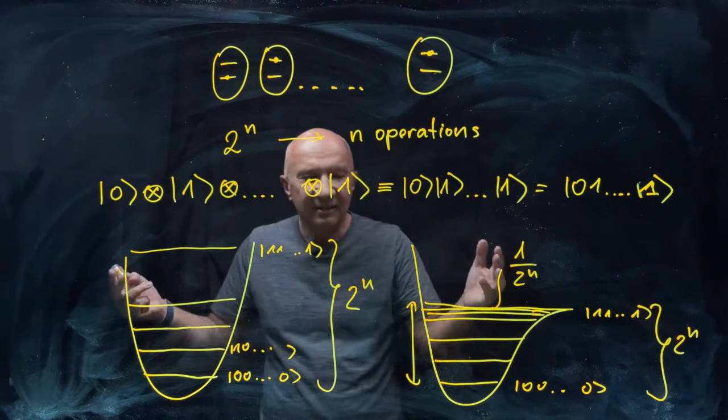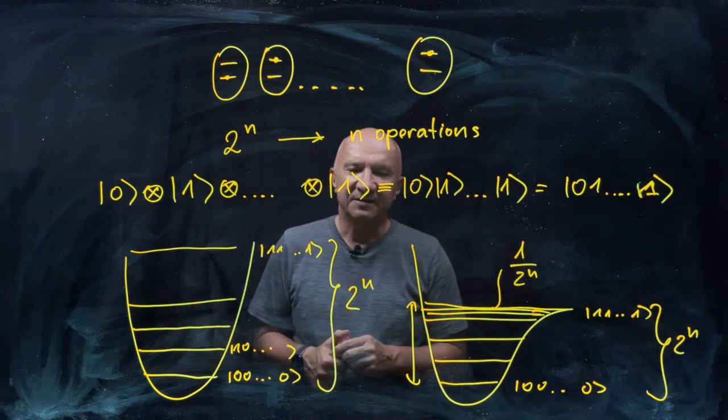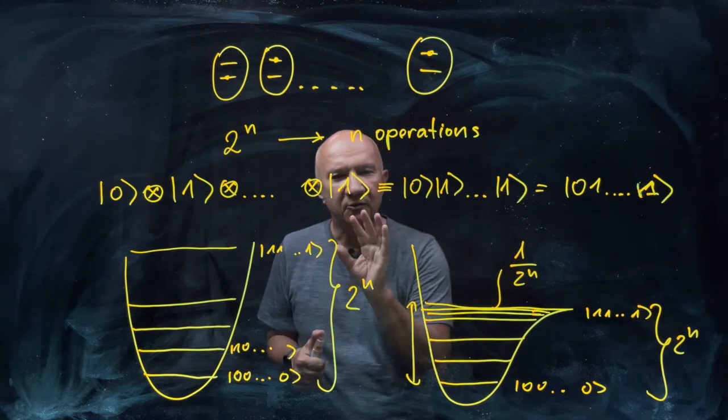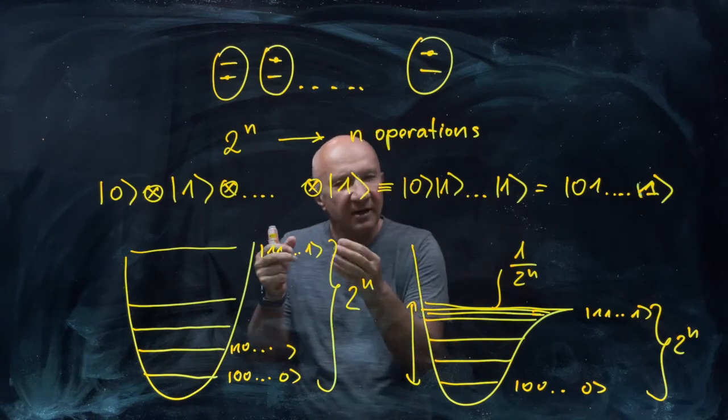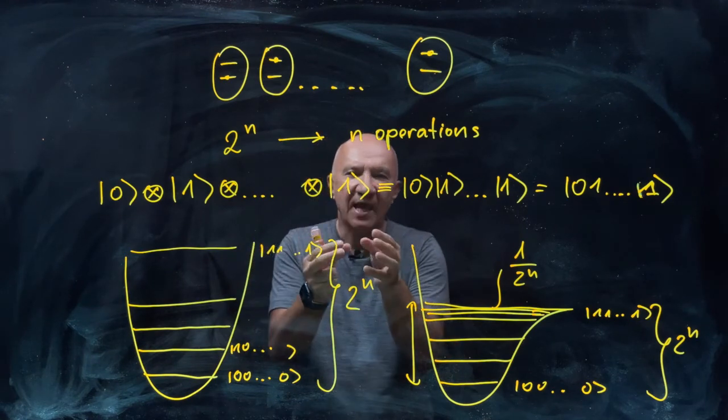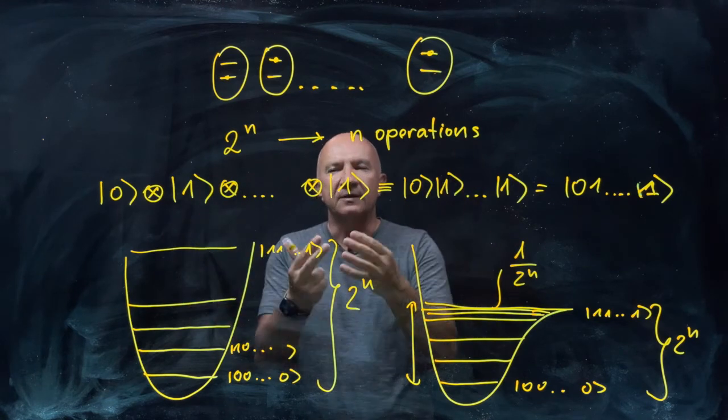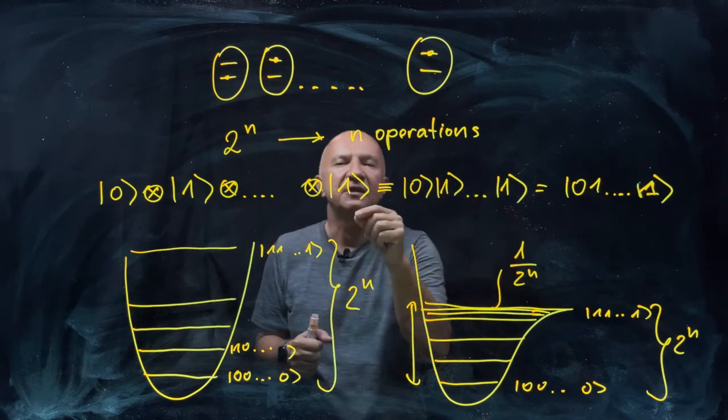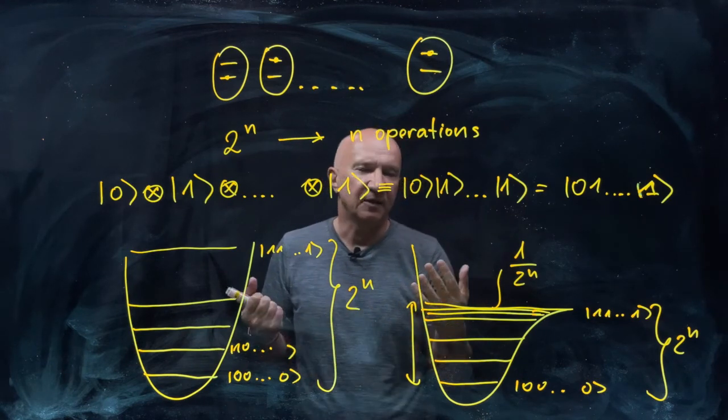So to cut the long story short, one can go through all kinds of arguments. But essentially, this kind of encoding, which is called unary encoding, is no good. It's just not efficient. You have to have subsystems in order to be able to explore the exponential number of configurations using only a linear number of operations.